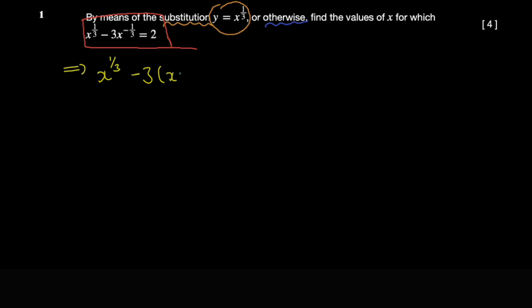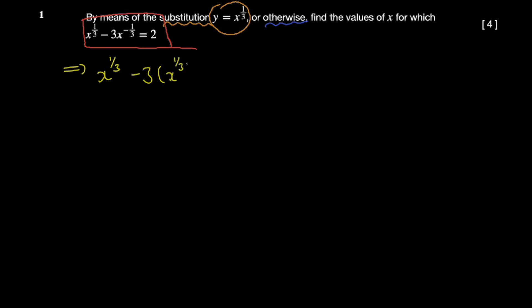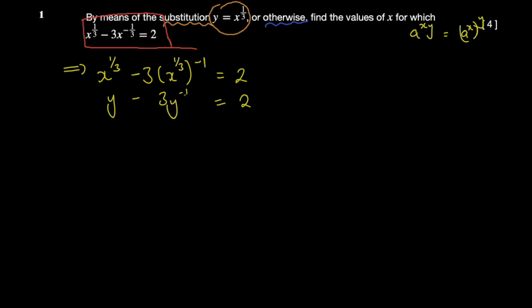To prepare x^(-1/3), I rewrite it as (x^(1/3))^(-1) using the index law: a^(xy) = (a^x)^y. This makes clear where to substitute y. Now I can substitute y for x^(1/3), giving: y minus 3y^(-1) equals 2.